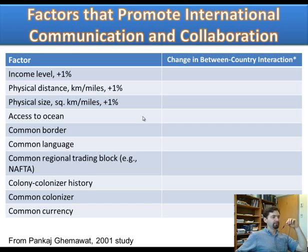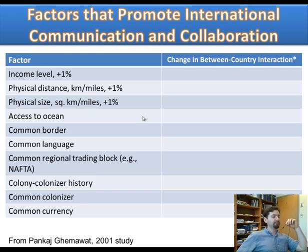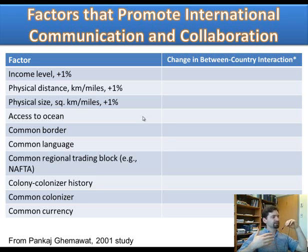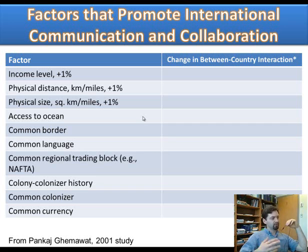The factors explored include income level — as a country becomes richer, it trades more, and the article looks at how much additional trade occurs in response to a 1% increase in income. Other factors include physical distance, physical size of the country, access to the ocean, common border, common language, common regional trading blocs like NAFTA, colonial history, common colonizer, and common currency.